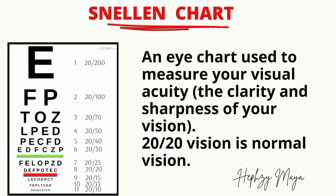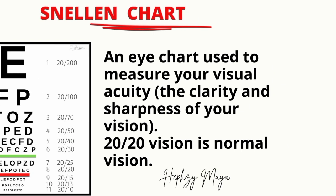Snellen chart. It's an eye chart used to measure your visual acuity — that is, the clarity and sharpness of your vision. 20/20 vision is normal vision. It means that from a distance of 20 feet from the chart, you can clearly see the letters that should be seen at that distance.